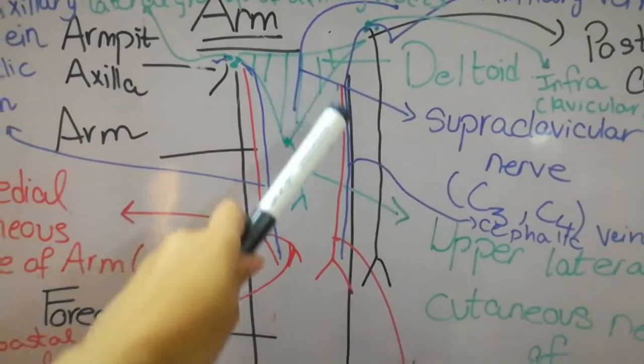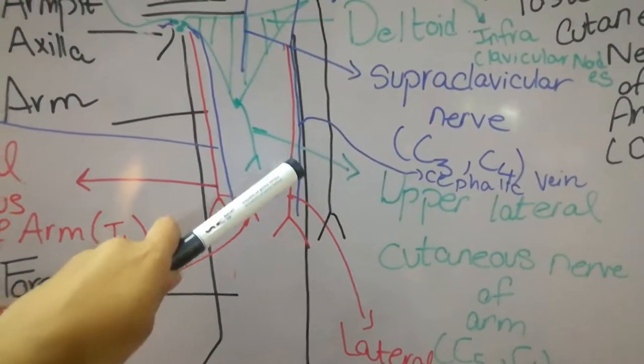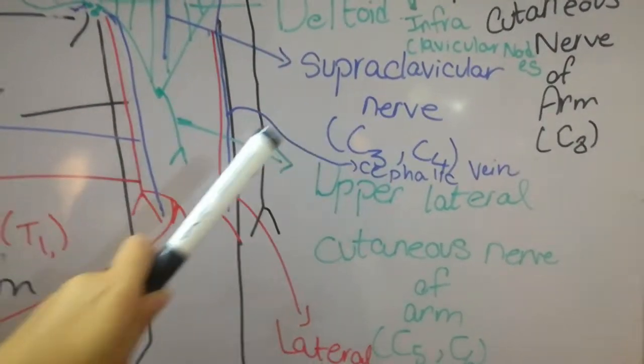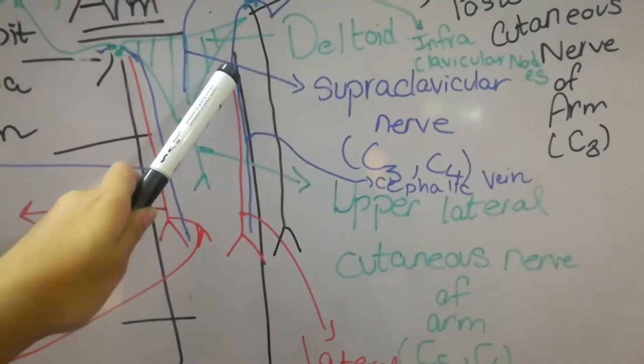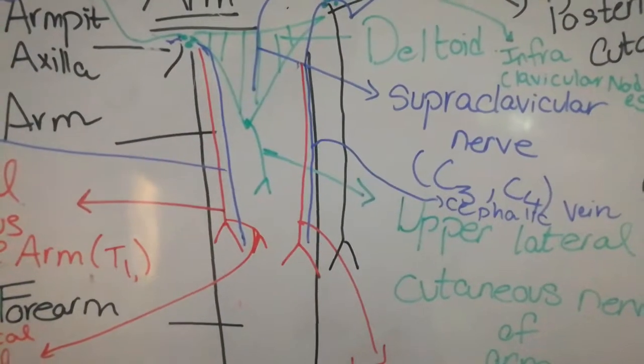The cephalic vein is present in the superficial fascia on the lateral side of the arm. The vein draining from the lateral side of the arm is known as the cephalic vein. This vein will move upward, and on reaching the axilla, it will drain into the infraclavicular group of nodes.